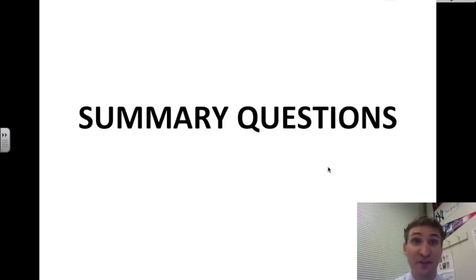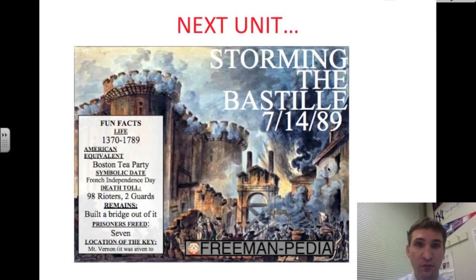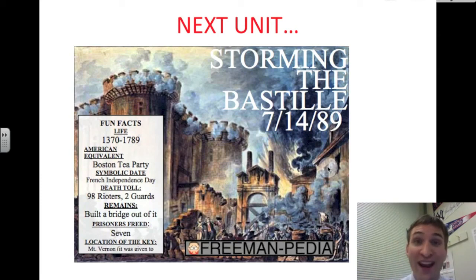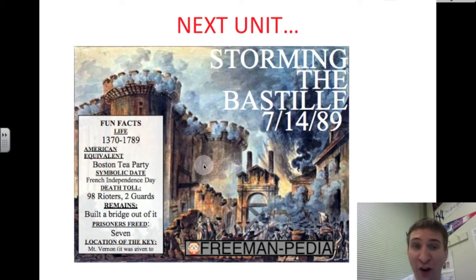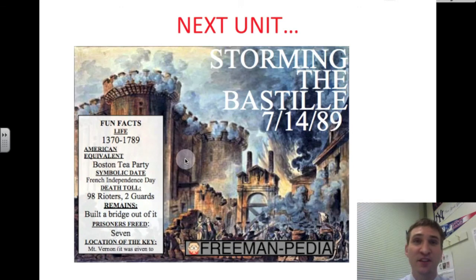We're almost done with Lesson 5 of Unit 4, ladies and gentlemen. We have the summary questions remaining — please complete those. And a preview of next unit: we're on to Unit 5, where you're going to learn about the French Revolution and the Storming of the Bastille, a prison in Paris — the Boston Tea Party of France. Until that time, this is Mr. Deegan, signing off.